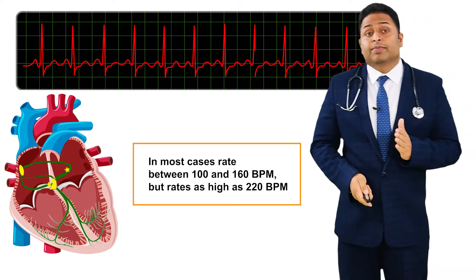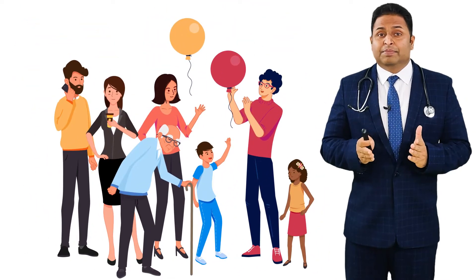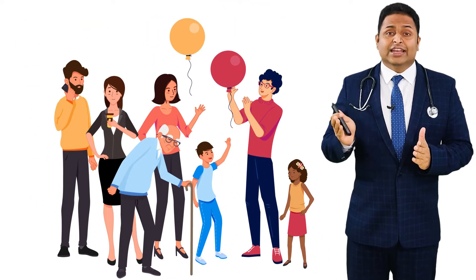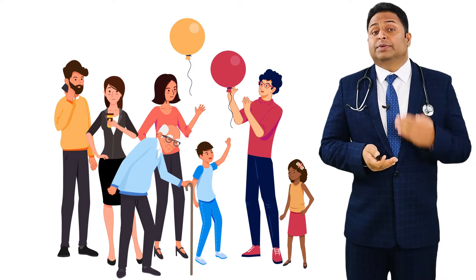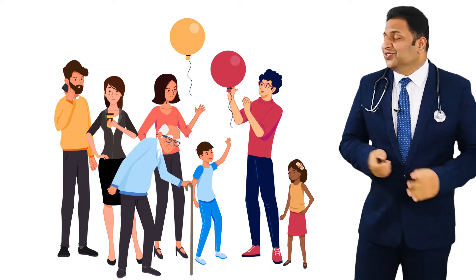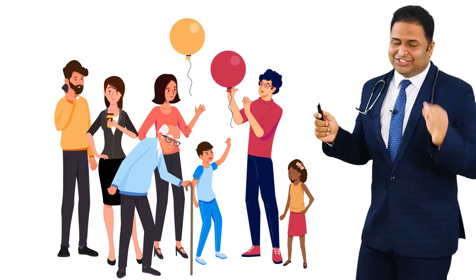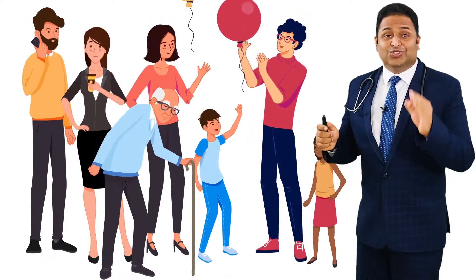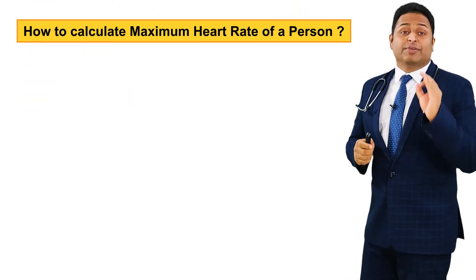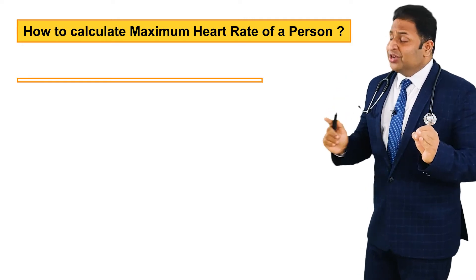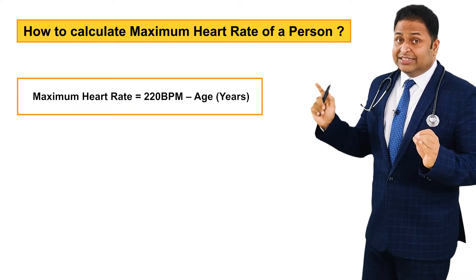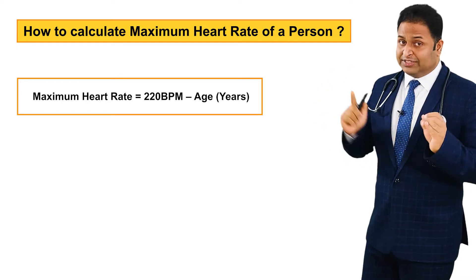Now the question is: how do you decide what the maximum heart rate is for a given person? There could be a kid, a middle-aged man, or an elderly person — for each, what is the maximum heart rate they can tolerate? We have a formula for that. The maximum heart rate is equal to 220 beats per minute minus the age in years of the person.